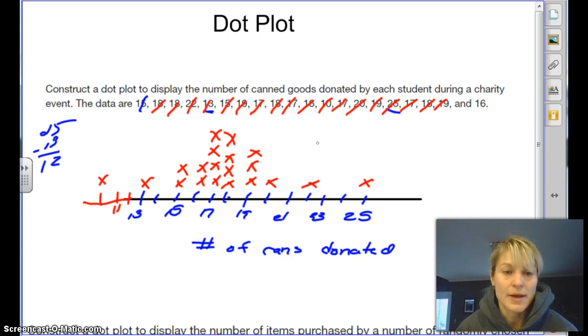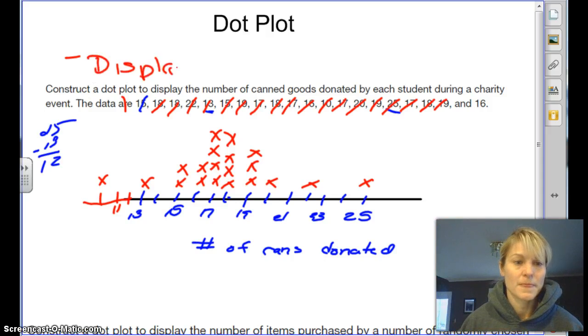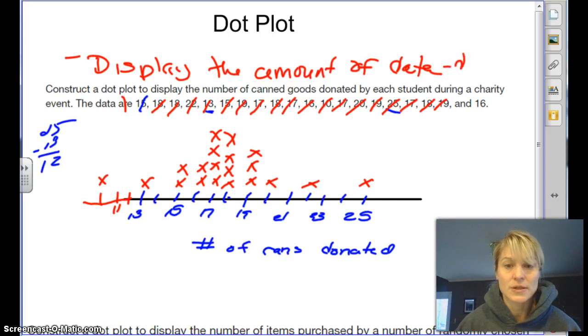So now that we have our dot plot, basically a dot plot we use to, it's a good way to just display the amount of data. You can see kind of where the data is at and how it's distributed. So basically a dot plot is used to sort of see where all your numbers are. We can definitely see a peak here at the number of 17 and 18 cans brought in. We had four students bring in 17 cans and four students bring in 18 cans.